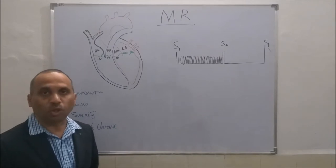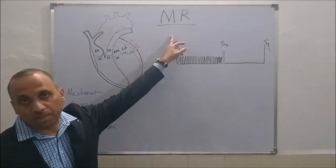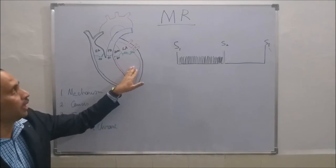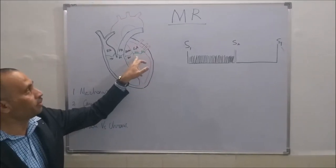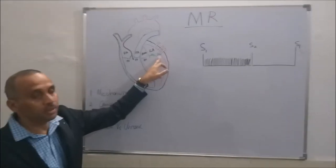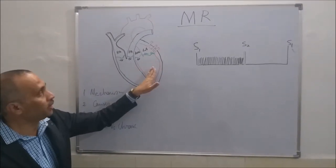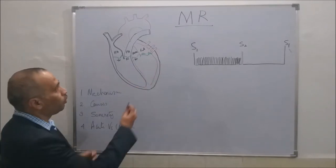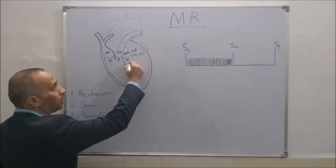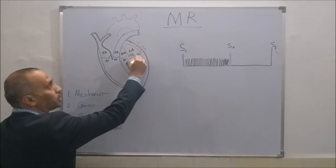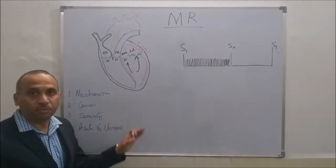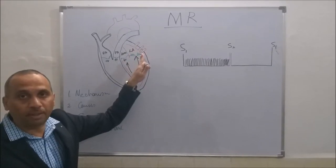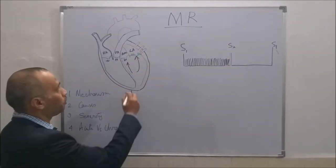Today class we are going to talk about mitral regurgitation. If you see this diagram, this is the LV, this is the left atrium, the anterior mitral leaflet and the posterior mitral leaflet. In mitral regurgitation, what happens is the blood instead of going towards the aorta goes back towards the left atrium during mitral regurgitation — that is the problem.